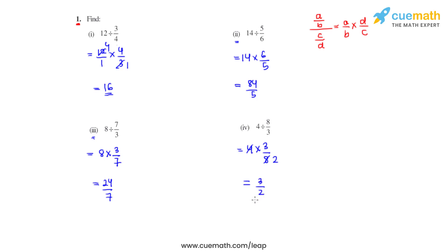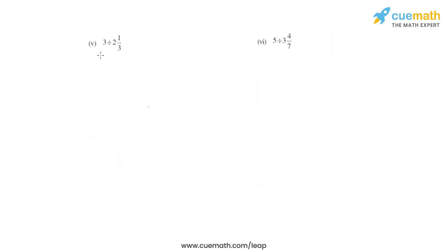Now we'll go on to the next set of parts. In the fifth part we have 3 which is to be divided by 2 and 1 third. So 2 and 1 third in improper fraction will be 7 over 3, and its reciprocal will be 3 over 7. So the product of 3 and 3 over 7 is 9 over 7, and that is the answer for the fifth part.